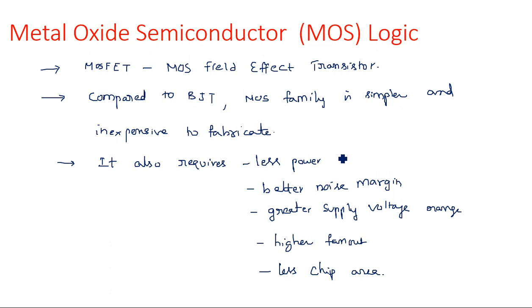The main advantages are: less area, less power, better noise margin, and greater supply voltage range. Logic low covers 0 to about 1.5 volts, and logic high covers 2.5 to 5 volts — so a higher supply voltage range is available. Higher fan out means the output of this logic family can be used to drive many other logic circuits.